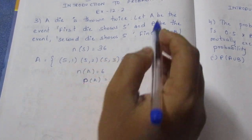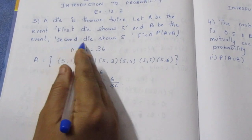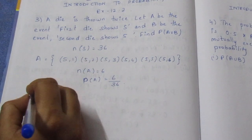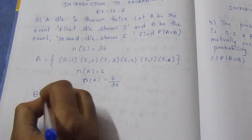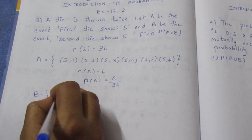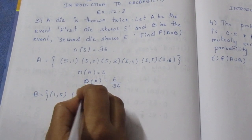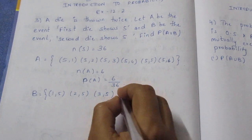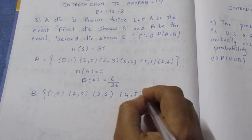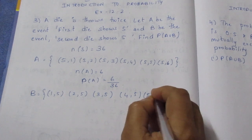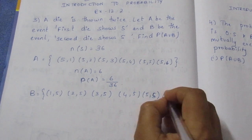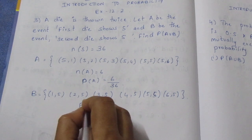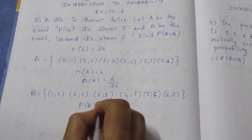Next, let B be the event: second die shows 5. So the second number is 5, giving outcomes 1,5 — 2,5 — 3,5 — 4,5 — 5,5 — 6,5. P of B is 6 by 36.